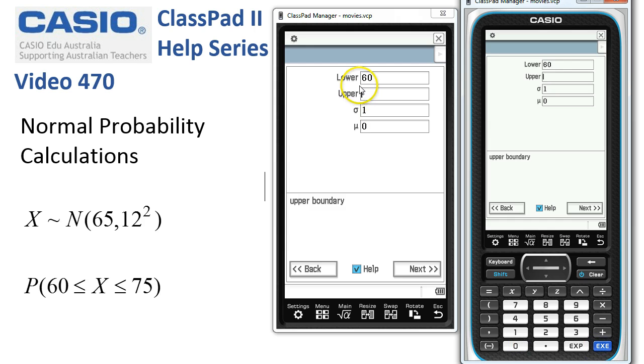I'll tap execute to pop the cursor into the next box. We'll go for the upper of 75.